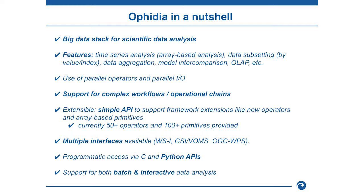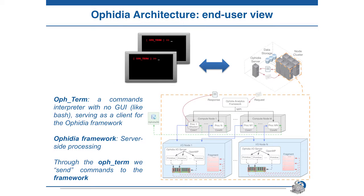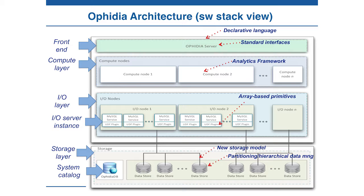Programmatic access is available via C APIs or Python APIs. It supports both batch and interactive data access. This slide shows the OPHIDIA architecture from an end-user perspective. In order to hide the complexity of the OPHIDIA framework stack, we developed the OPHIDIA terminal, which is a command interpreter with a CLI like bash, serving as a client for the OPHIDIA framework. The OPHIDIA framework performs server-side processing, and through the OPHIDIA terminal we send commands to the framework.